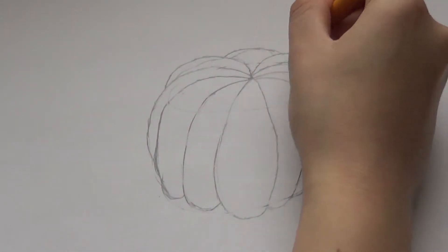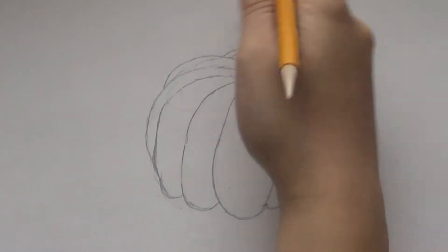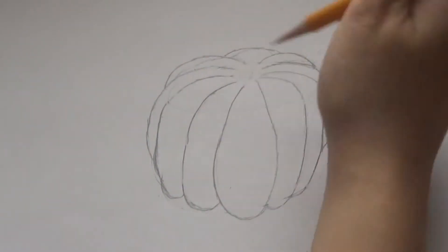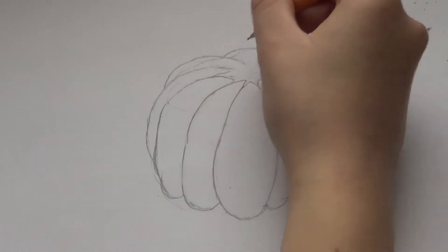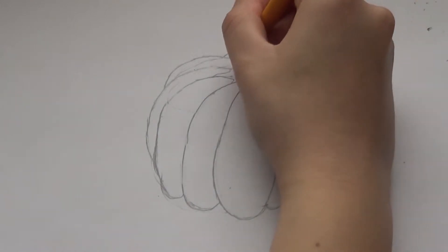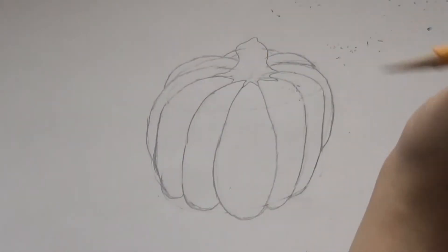Now we're starting to get a pumpkin shape, except we need to add in the stem. So I'm going to erase a little bit from the center. And then I'm going to draw lines that connect each of those little portions of the pumpkin, except they're going to be a little more pointed. And then I'm going to draw this curvy shape that's kind of rectangular that comes up and I want to make the edges of it a little wavy.